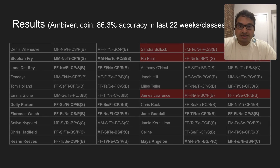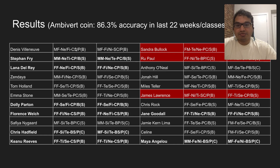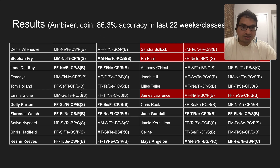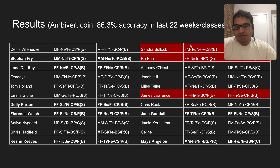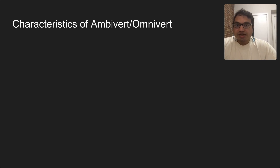My results were 86.3% accuracy for the ambivert/omnivert coin. On the left side there are 11 typings and 11 types on the right — only three total that I got wrong. For the ambivert coin I'm seeing mopes as mopes, skibs as skibs, ambiverts as ambiverts, and omniverts as omniverts. I'm actually getting the first two animals right for all of these. For example, last week we had Maya Angelou and she was not blast-play — I knew that because she was not omniverted.